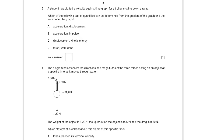For question number three, we are given that a student has plotted a velocity against time graph, and which of the following pair of quantities can be determined from the gradient of the graph and the area under the graph. We know that the acceleration is the gradient — that's the change in velocity over change in time — and the area under the graph is the displacement, so A is the answer.